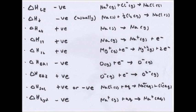Atomization is when you turn something from a solid to a gas — so sodium in a solid state is turned into a gas. For ionization energy, which you should be familiar with from AS, sodium loses an electron and is ionized, so it becomes Na+ in the gaseous state.